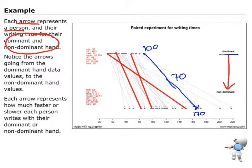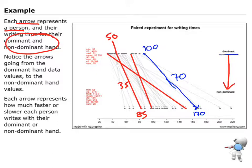If I take a different arrow — this one, for example — their dominant hand time is maybe around 50 seconds, and their non-dominant hand is around maybe 85 seconds. So that means they have taken 35 seconds longer to write with their non-dominant hand than their dominant hand. The arrow represents the difference in time between these two events.